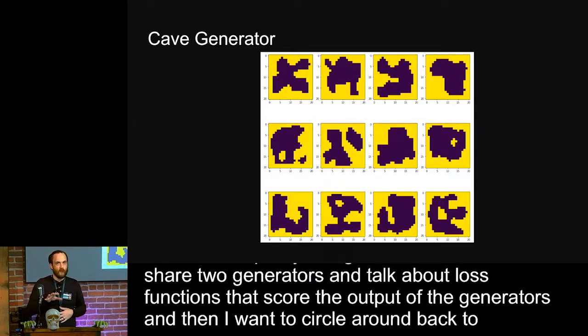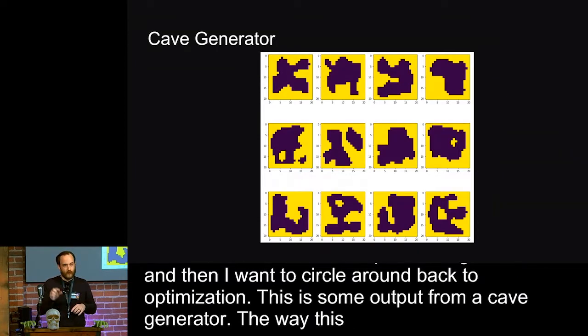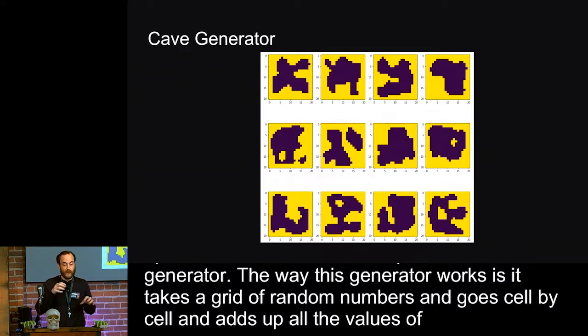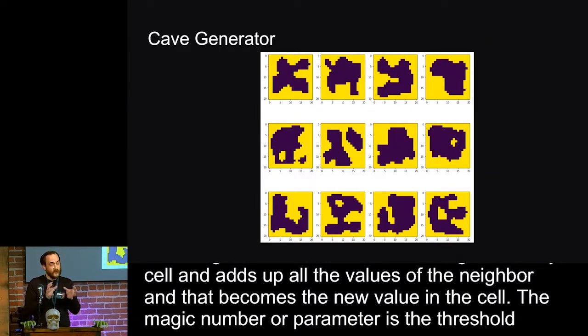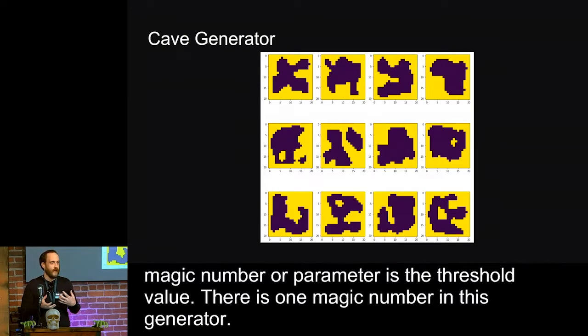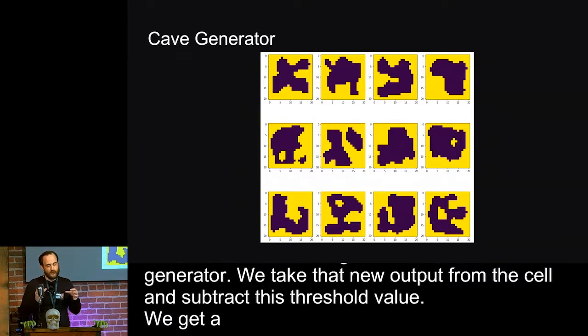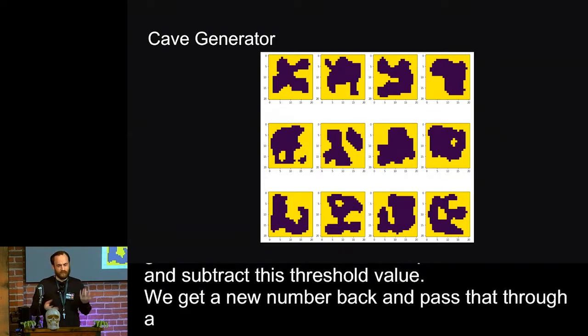So this is some output from a cave generator. And the way this generator works is it takes a grid of random numbers, and it goes cell by cell, and it adds up all the values of the neighbors, and that becomes the new value in that cell. The magic number or the parameter for this is this threshold value. There's just one magic number in this generator. And so we take that new output from that cell, and we subtract this threshold value. We get a new number back, and we pass that through what's called a sigmoid function. Really, all that does is just squash everything down into a range of zero to one. It makes it a little bit easier to play with. And just repeat that process three or four times.